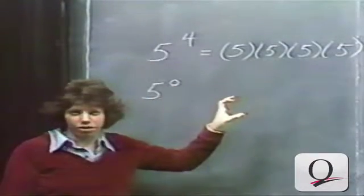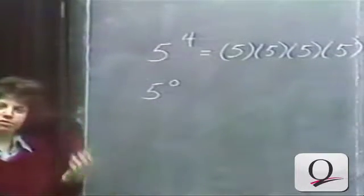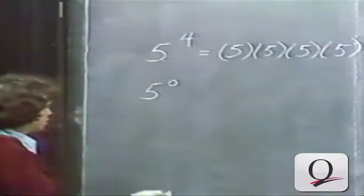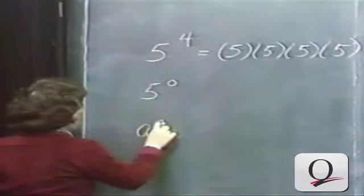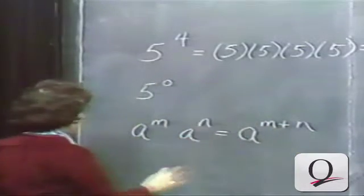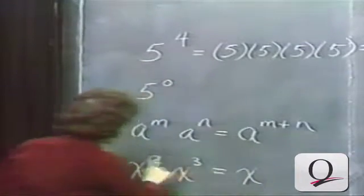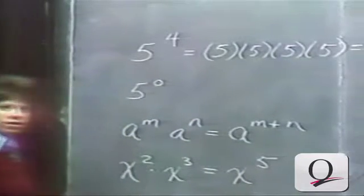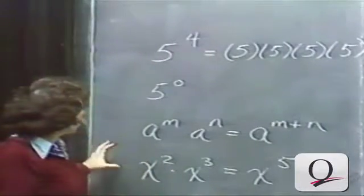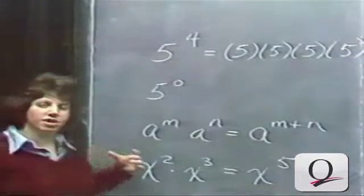Since we can't rely on our intuition, what we would like is that the rules we've developed for natural number exponents should hold true for zero and negative exponents as well. However we're going to define 5 to the zero, it should be consistent with the rules we already have for natural number exponents. We don't want a different set of rules for every type of exponent. Let's recall the first rule of exponents: a to the m times a to the n is a to the m plus n.